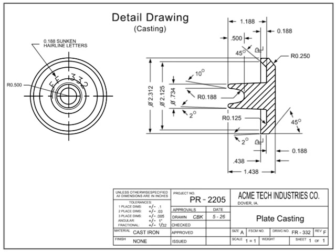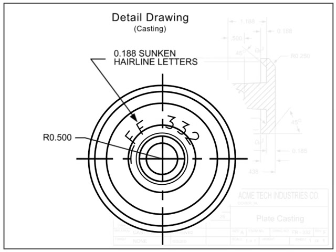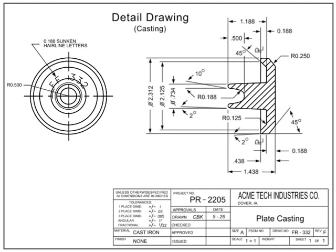A critical part of any configuration control process is adequate identification of manufactured parts. Most castings have their part numbers permanently cast into the part. The dimensions on a casting drawing are what the foundry or manufacturer uses to make a pattern or mold, and are the final cast dimensions of the part. Other information that may be included on a casting drawing are mold lines, datum plane references, and even information on how to best remove the part from the mold.